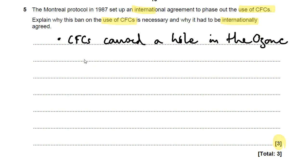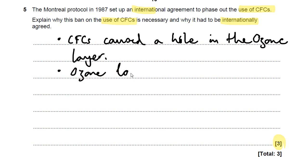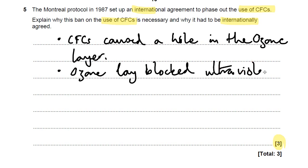The ozone layer is a layer of oxygen that's very high in the atmosphere and it's very useful for keeping the Earth at a steady temperature, because what it does is it blocks out ultraviolet radiation. For this mark, you must mention it blocking ultraviolet radiation — so the ozone layer blocked ultraviolet or UV radiation.